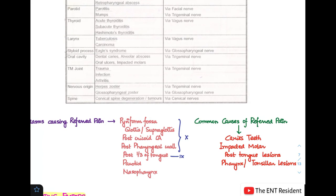Coming to common causes of referred pain. Even out of all of these causes, the most common causes to look for when there is a case of referred pain - referred pain is when your patient is complaining of pain in the ear but every other examination of the ear is coming normal. That is when you have to suspect other causes. Out of them, the most common ones are caries teeth, impacted molar, posterior tongue lesions, and pharynx and tonsillar lesions.